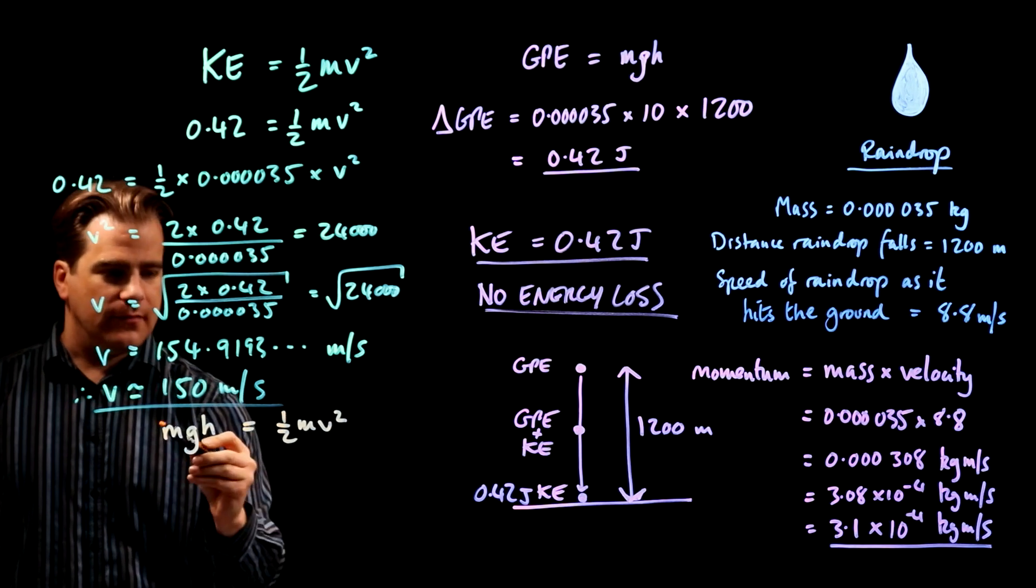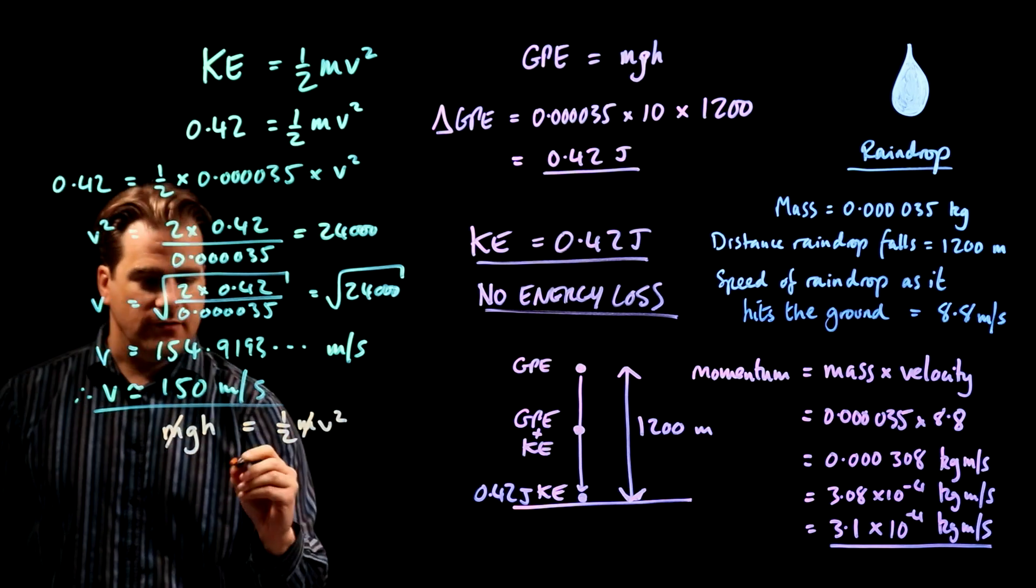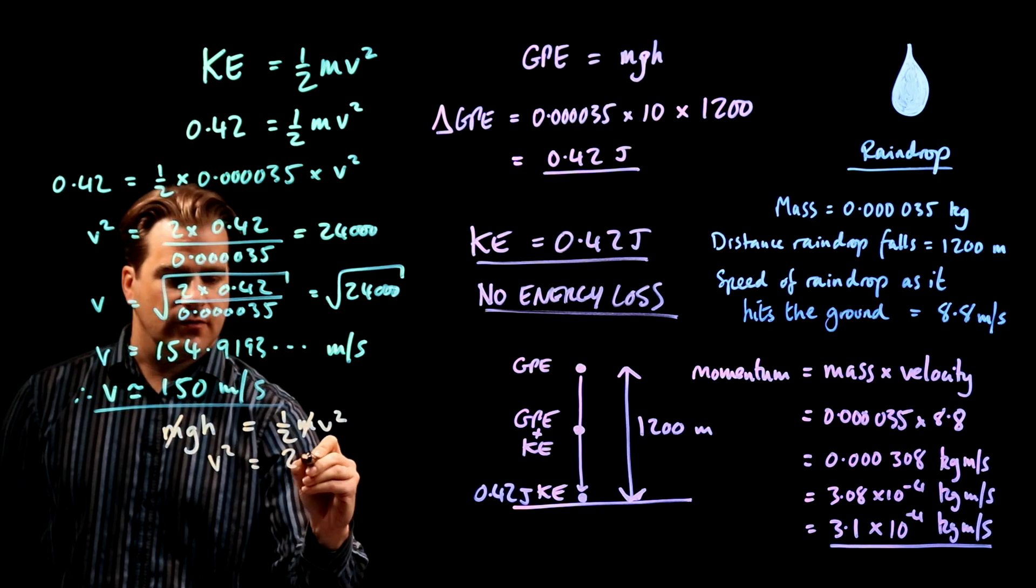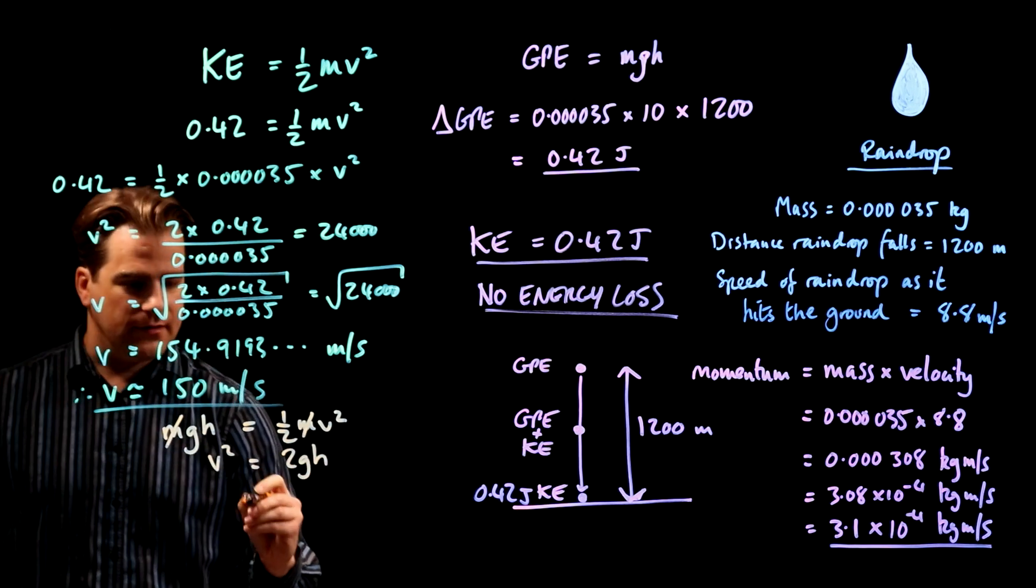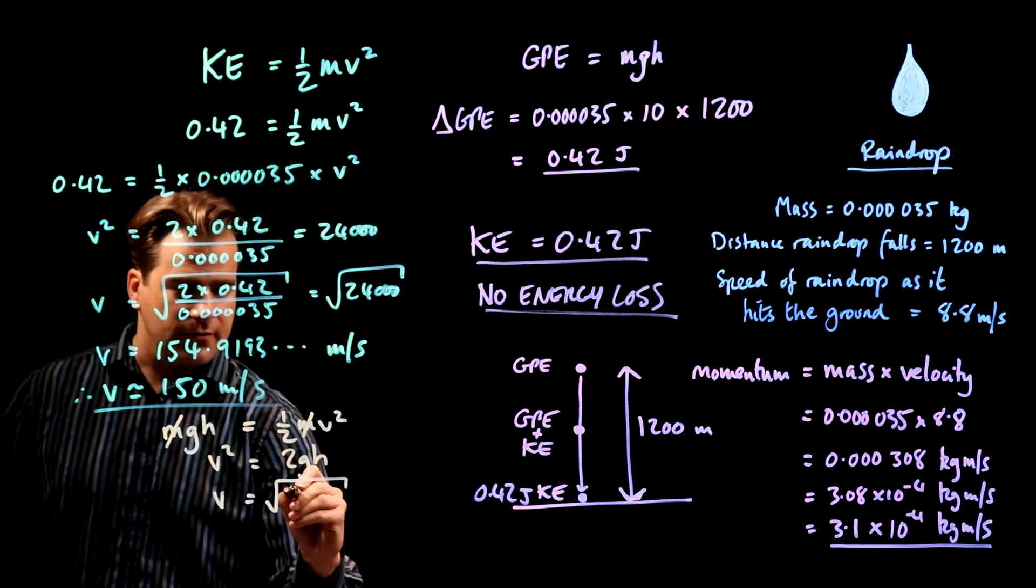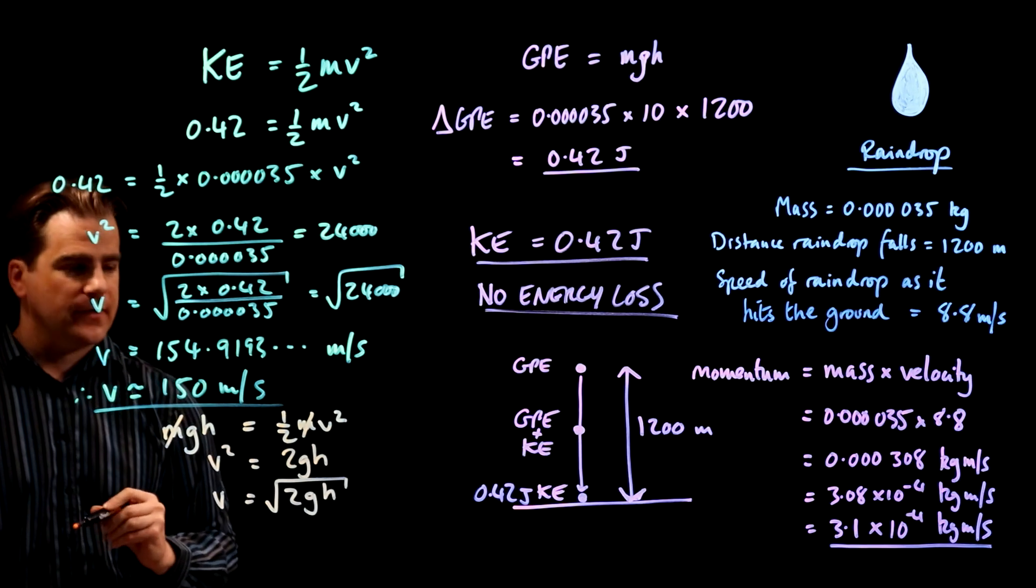We can work out the velocity as it hits the ground from this. It's nicer this way because you don't have to introduce numbers early on. So, look, m on the left, m on the right, they cancel, okay? Rearrange and we get V squared is 2gh, okay? So, therefore, V is square root of 2gh, okay?